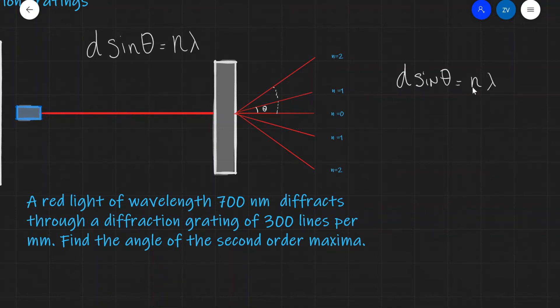In this case, we know everything except the angle. The distance d is the line separation: 1 over the lines per meter. So 300 per millimeter equals 300 times 10³. We have: 1/(300×10³) × sin θ = n × λ, where n=2 and λ=700 nanometers = 700×10⁻⁹ meters.